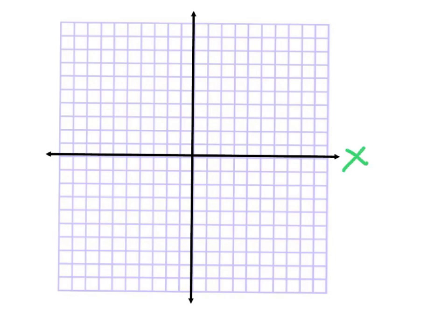The first thing you always want to do when you have an axis drawn is label the x and the y axis. The one going across or sideways is called the x-axis. The one going up and down is called the y-axis. You might notice that it's split into four sections — one, two, three, four — and those are actually called quadrants.